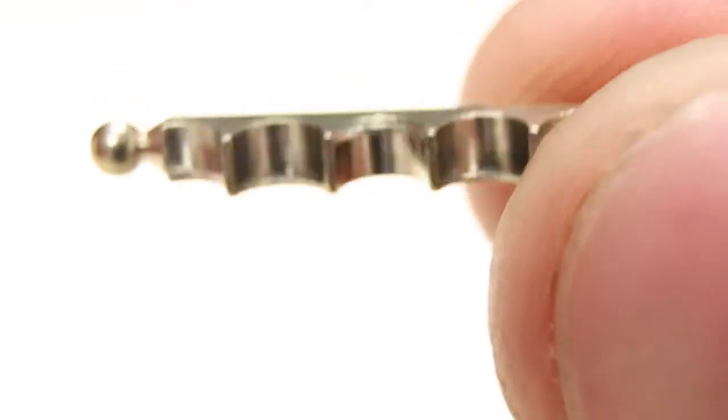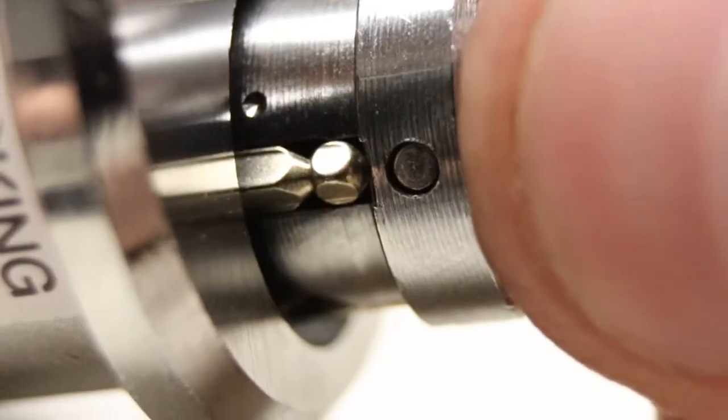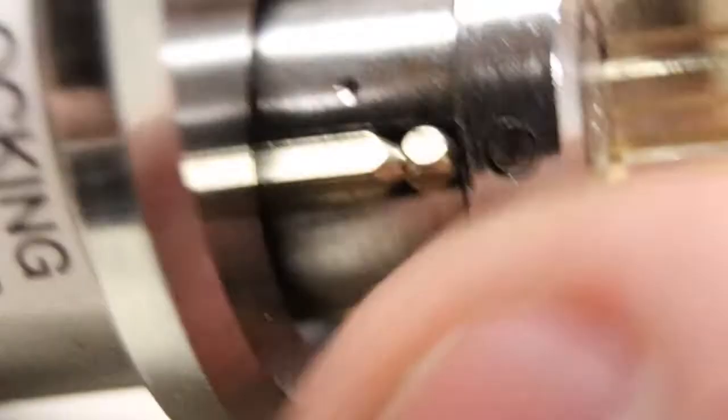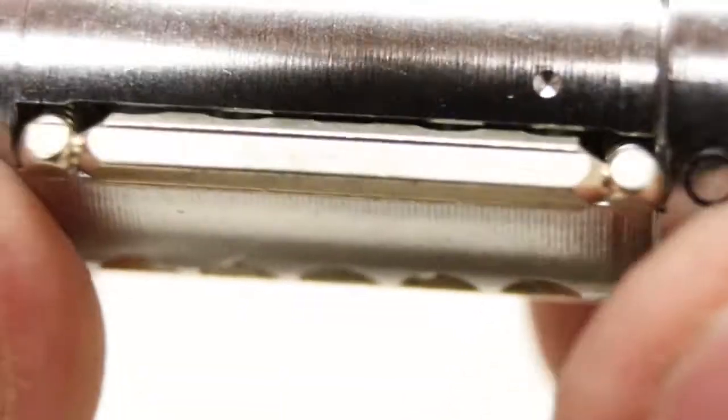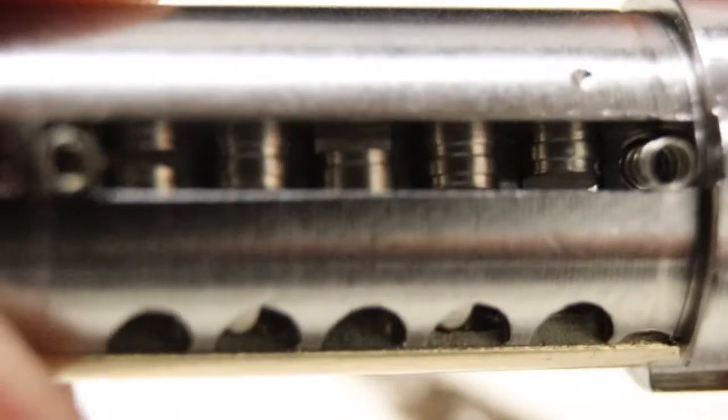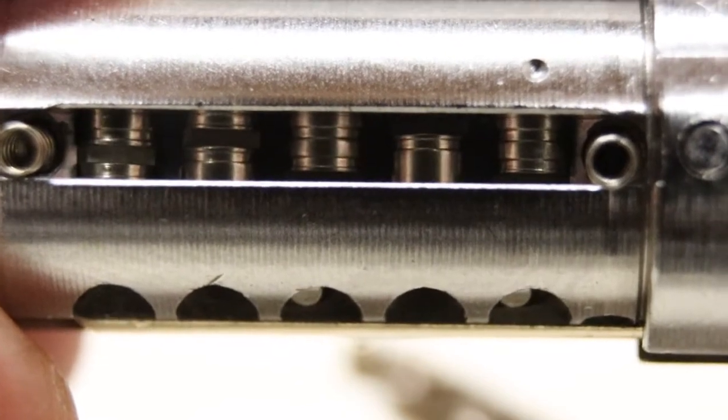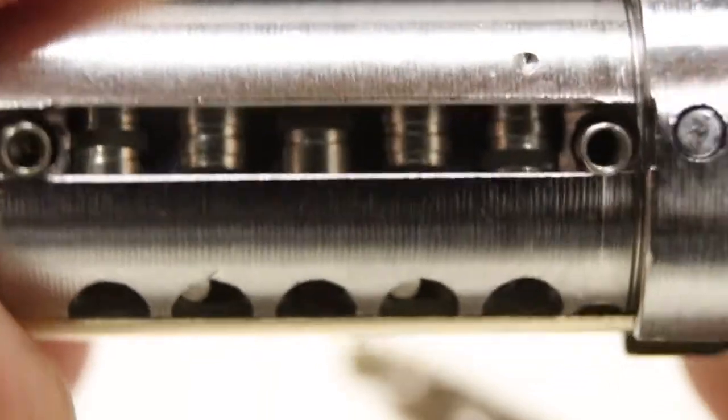If you had the wrong key or didn't have the key inserted correctly, it wouldn't turn. I can give you a closer look at that. You can see the five side pins right there, and when I pull the key out, you can see them move.